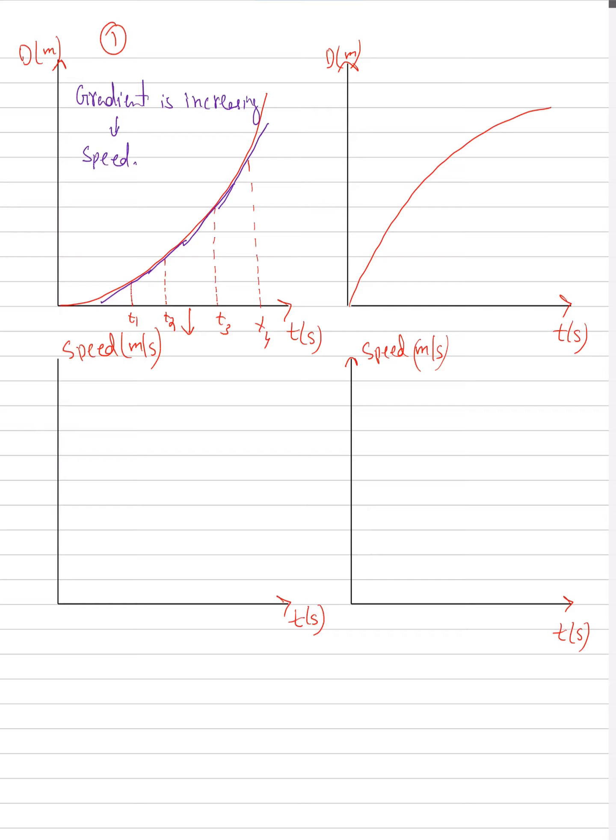So how do I show it in the speed-time graph? I'll simply start from zero. Why am I starting from zero? Because here, if our graph is a tangent, it will be a horizontal line. Horizontal line means gradient zero. Gradient zero means speed zero. So if I make a speed-time graph, my speed will be constantly increasing. So this is my case 1 speed-time graph.